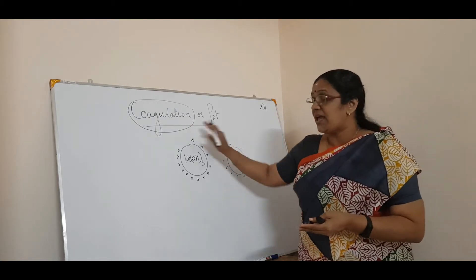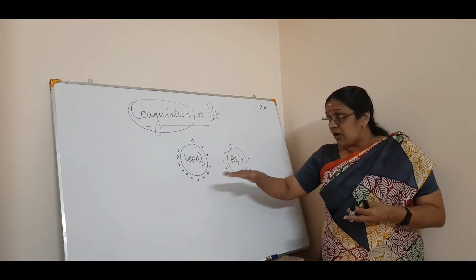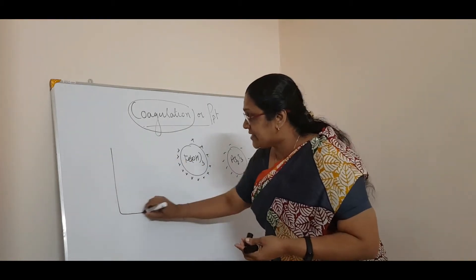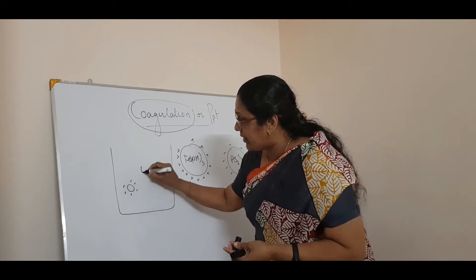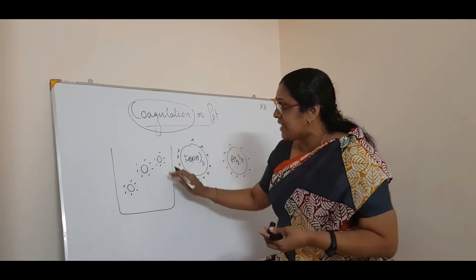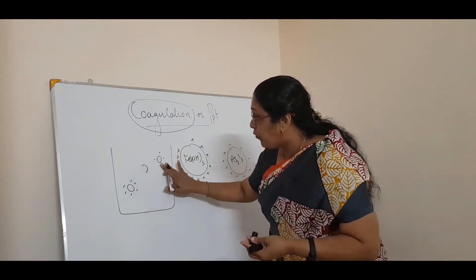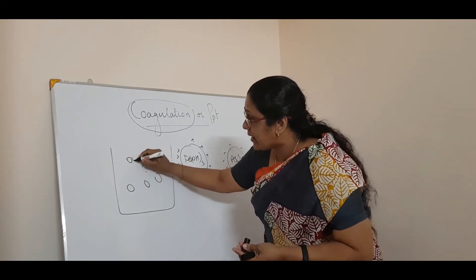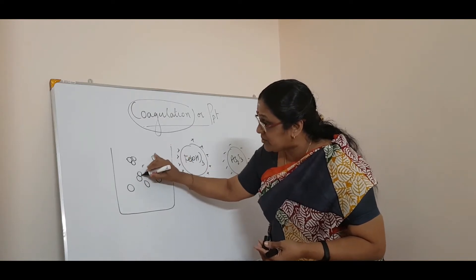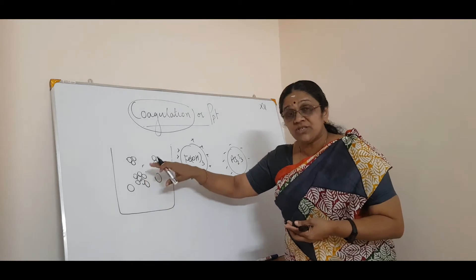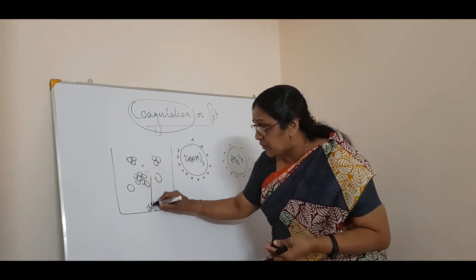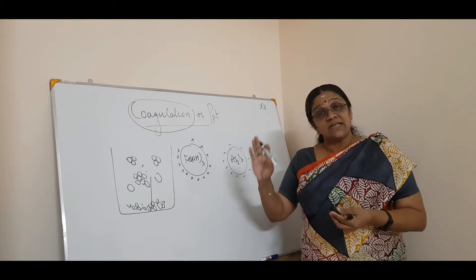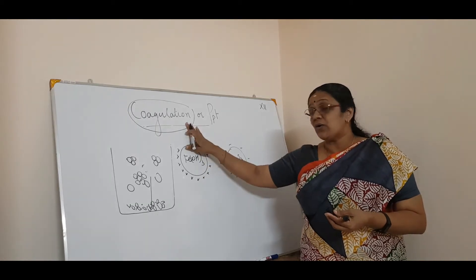The settling of colloidal particles is called coagulation or precipitation. How do you coagulate a colloidal sol? By removing the charge — that's it. If negative colloid particles have their charges removed, the molecules come together, form aggregates, and due to the force of gravity, settle down at the bottom. This is coagulation or precipitation.